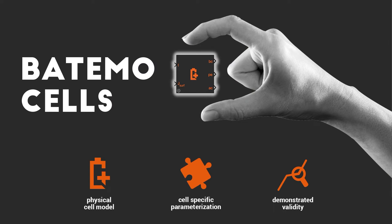Three things are really important in that context. I already mentioned them. Our model is physical, it's specifically parameterized for the cell that you use, and we demonstrate validity and really prove that the model is correct. Because these three things are so important, let's go through them step by step.